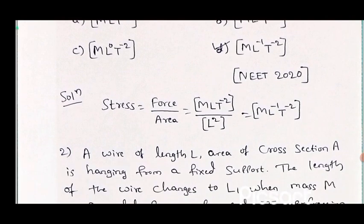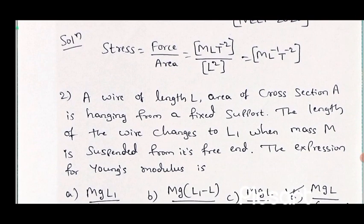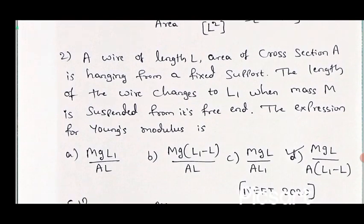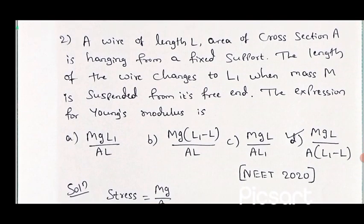Second question: a wire of length L and area of cross section A is hanging from a fixed support. The length of the wire changes to L1 when mass M is suspended from its free end. The expression for Young's modulus is — four options are given. This question is asked in NEET 2020.